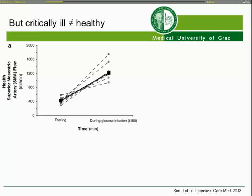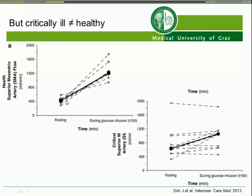There is an increase in healthy volunteers of blood flow after feeding, and there is a difference compared to our critically ill patients. Some of them are able to increase perfusion, others do not, and in some patients perfusion actually goes down. So when you start to feed, you have to be sure that at least basic perfusion to the gut is adequate.